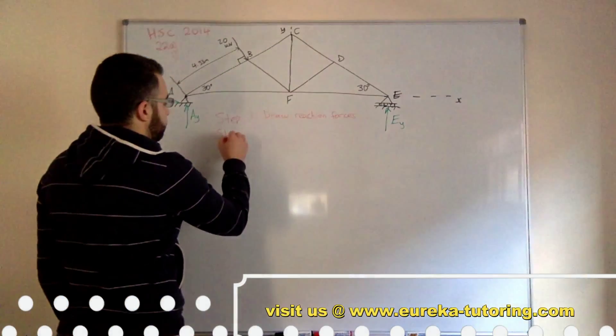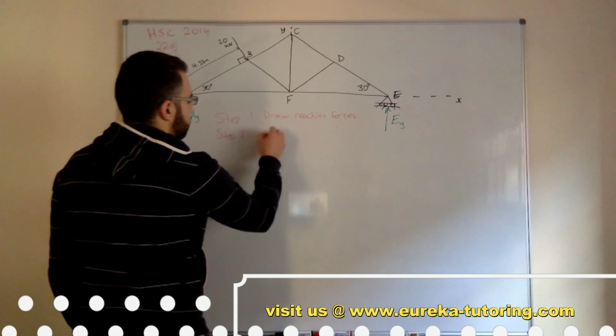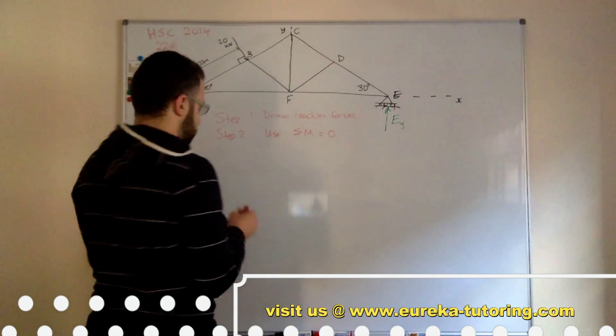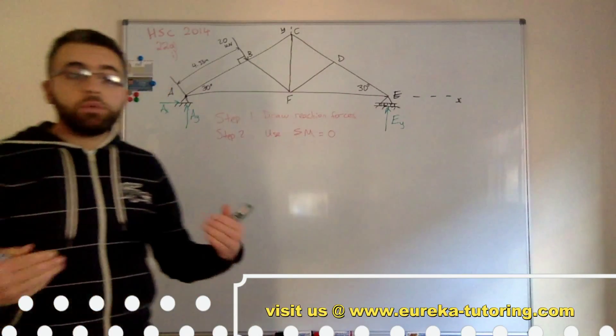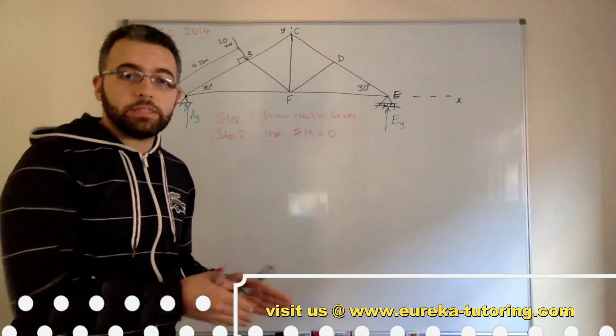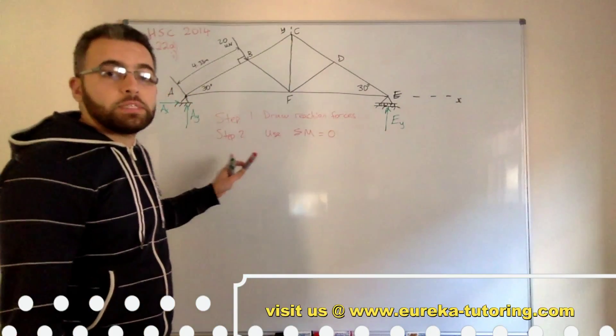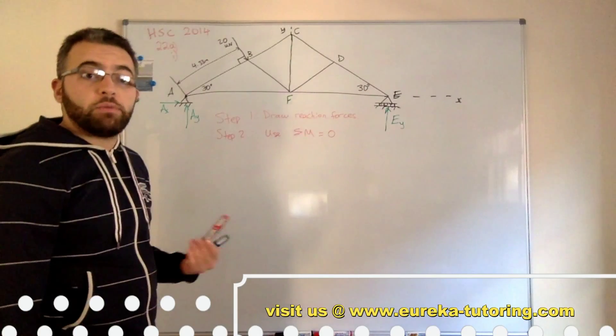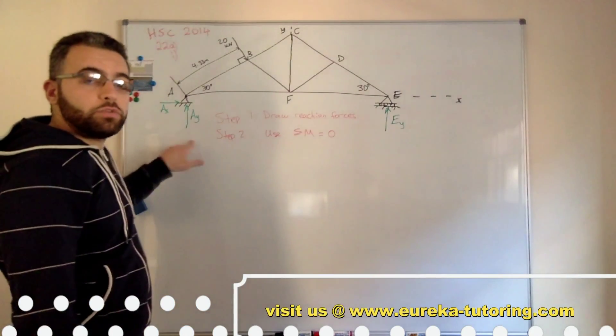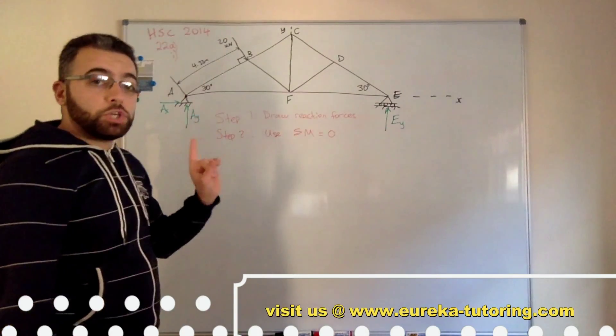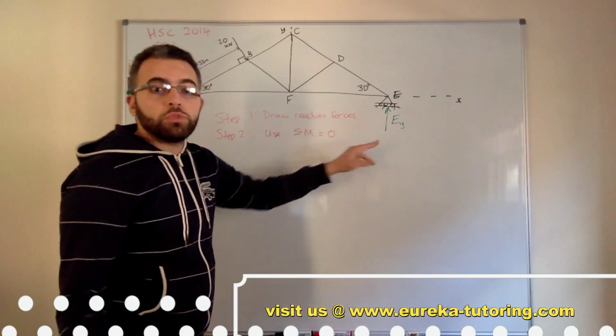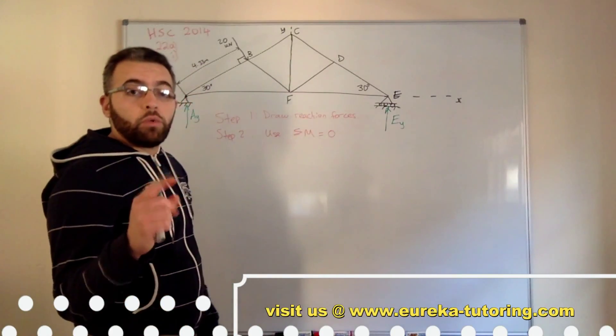So step 2. Now with the moments, moments is the force times the perpendicular distance. So for this question I'm going to do sum of moments about point A. By doing sum of moments about point A, it gets rid of these two forces because these two forces are going through the point. So the force that will generate a moment will be this force here and this force here, which means now we only have one unknown rather than the three.